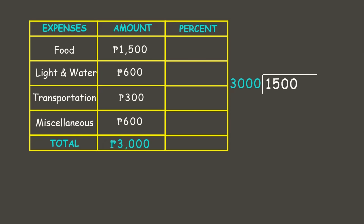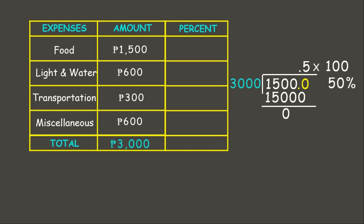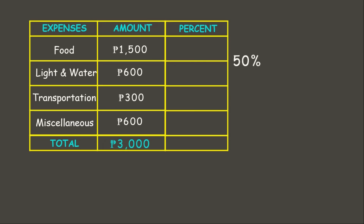Since 1,500 is smaller than 3,000, we add a decimal: 1,500 ÷ 3,000 = 0.5. Multiplying 0.5 by 100 gives us 50 percent. That is the percent for food.